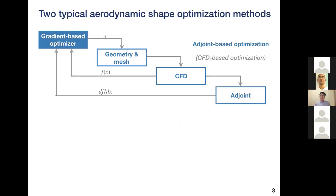There are two approaches in the literature for aerodynamic shape design optimization. The first is the adjoint-based method, which takes advantage of efficient computation of aerodynamic derivatives using the adjoint method and the efficient searching capability of adjoint gradient-based optimization algorithms. Since the objective functions and constraints are evaluated using high-fidelity CFD models, this method is also called CFD-based optimization.